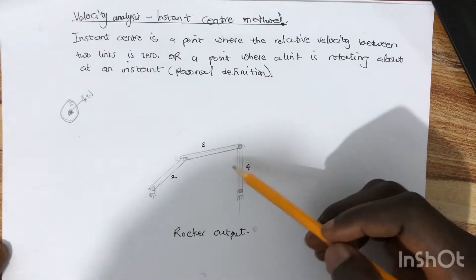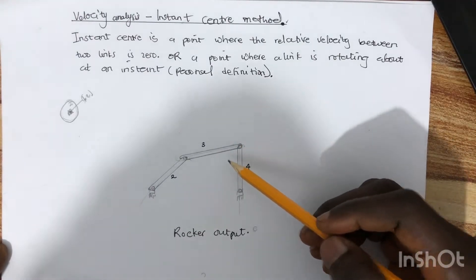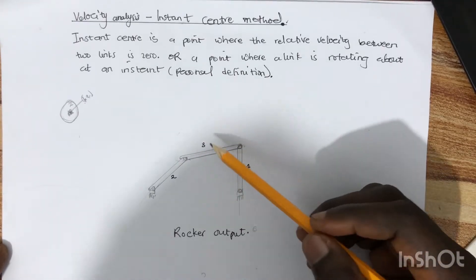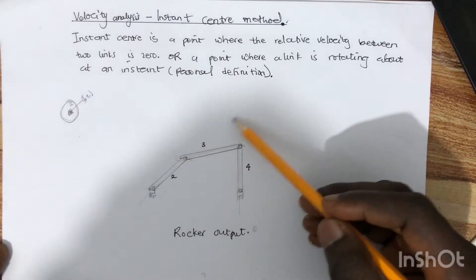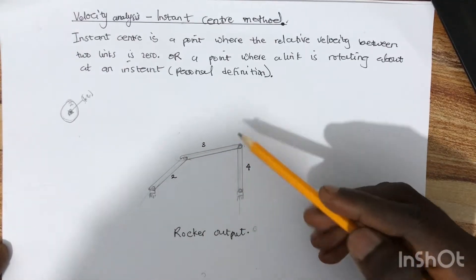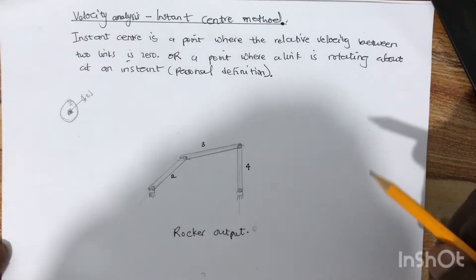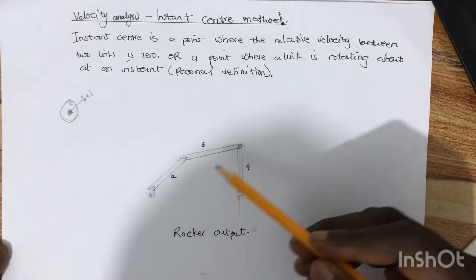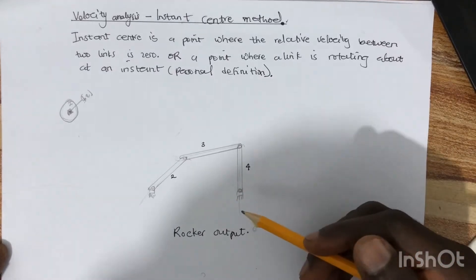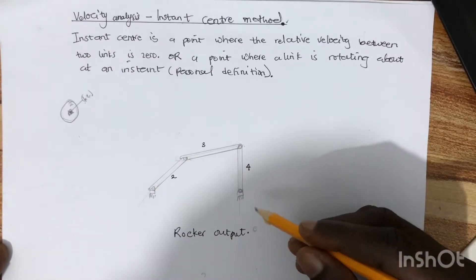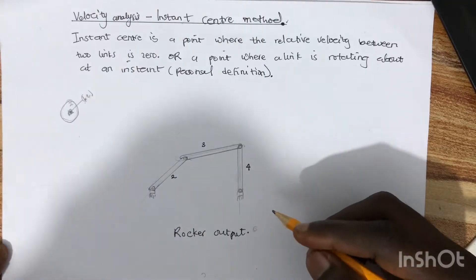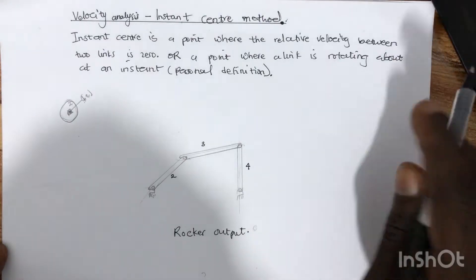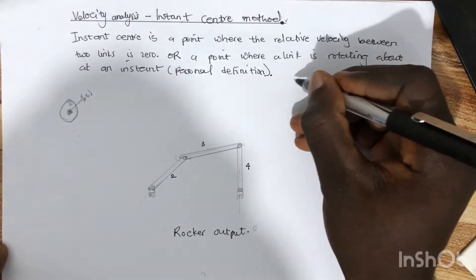Links two, three, and four are all rotating about certain points. Some of these instant centers are visible and some are imaginary, so you have to locate the ones that are not visible as well. Before we do that, we can calculate the expected number of instant centers of the mechanism using a simple formula.